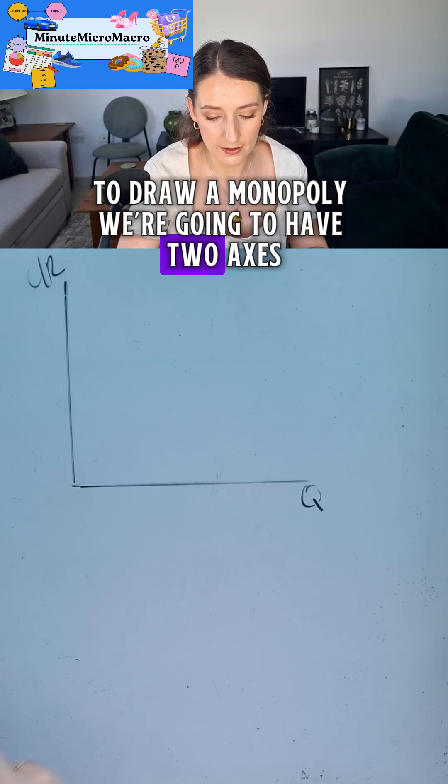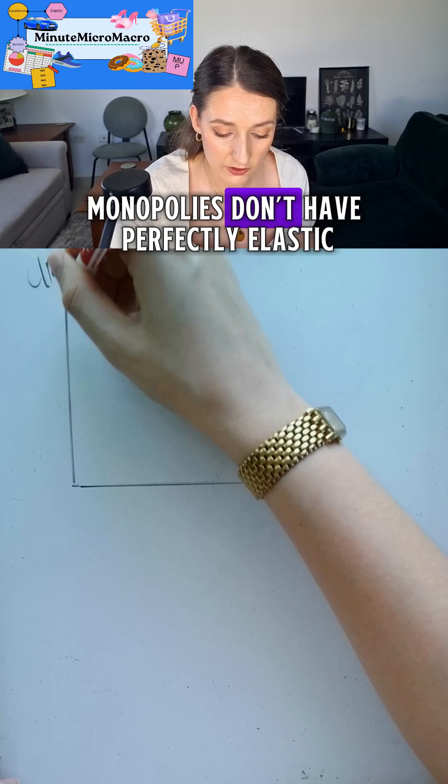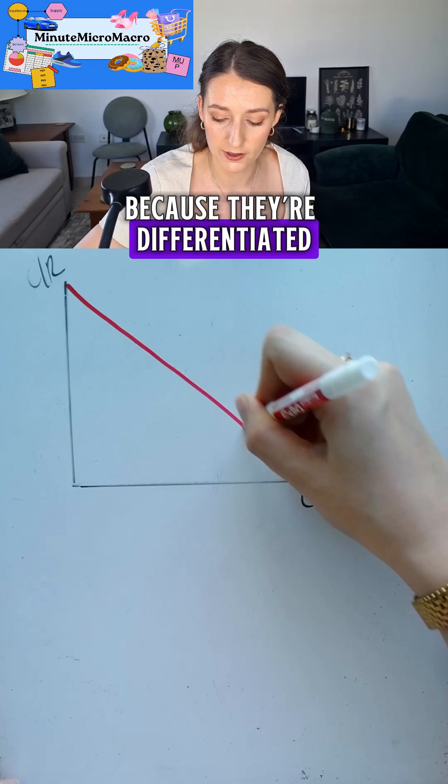To draw a monopoly we're going to have two axes. We have our cost and revenue on our y and our quantity on our x. Monopolies don't have perfectly elastic horizontal demand curves. Monopolies have the power to set their own prices because they're differentiated.